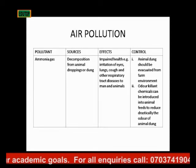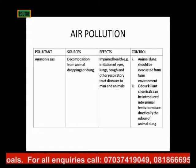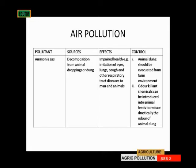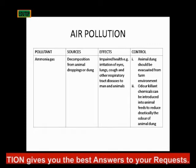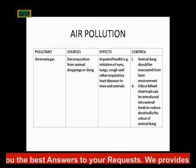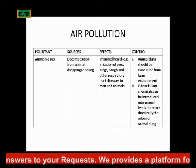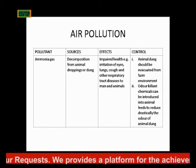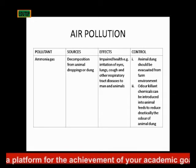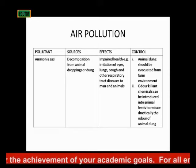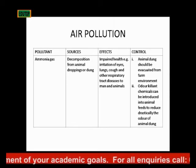How do we control this? First, animal dung should be evacuated from the farm — don't leave animal dung all over the place as it will cause air pollution. Number two, odor-killing chemicals can be introduced into the animal feed so that it will drastically reduce the odor of animal dung, helping to suppress the odor that the animal will release. That is a way to control or minimize the air pollution caused by ammonia gas.